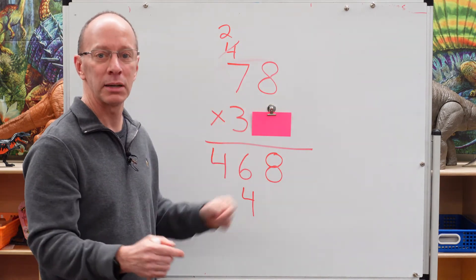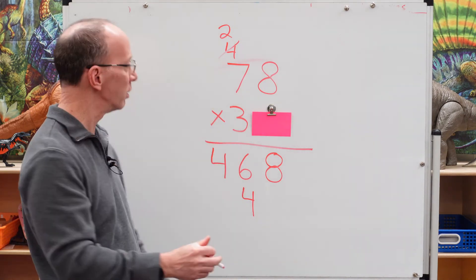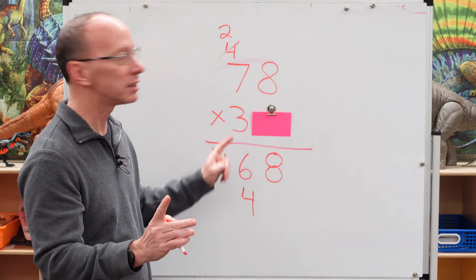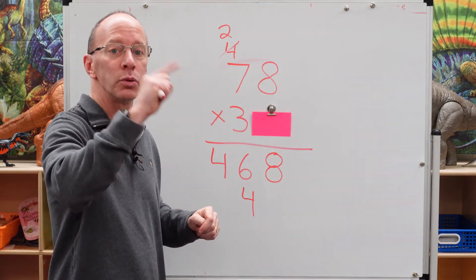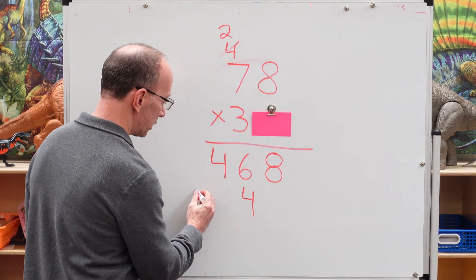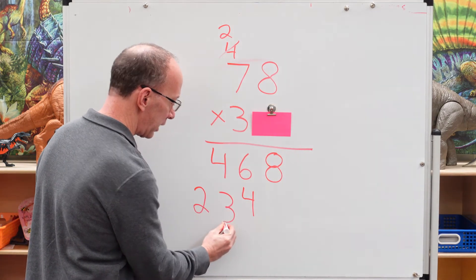3 times 7 or 7 times 3? Yeah, 21. Don't forget to add that 2 up there. 21, 22, 23. Put the 2 here and the 3 right there.